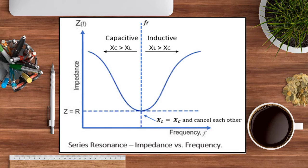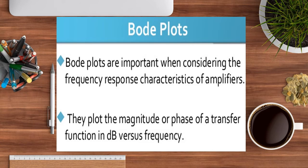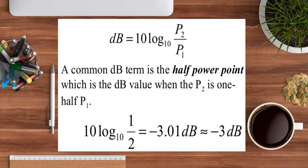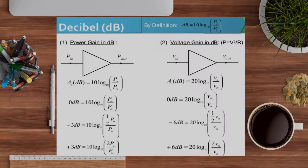Resonance occurs when the impedance Z equals R and the inductive reactance X_L equals the capacitive reactance X_C. The Bode plot is important for observing the frequency response characteristics of an amplifier — showing the magnitude and phase of the transfer function as dB versus frequency. Power level in decibels: 1 bel equals 10 decibels, and dB equals 10 log₁₀(P2/P1), where P2 is the output power and P1 is the input power.